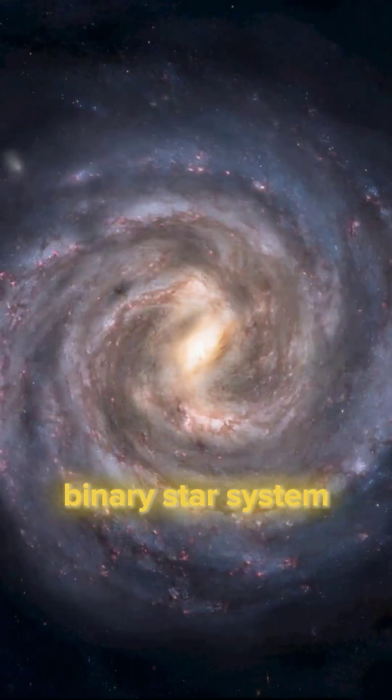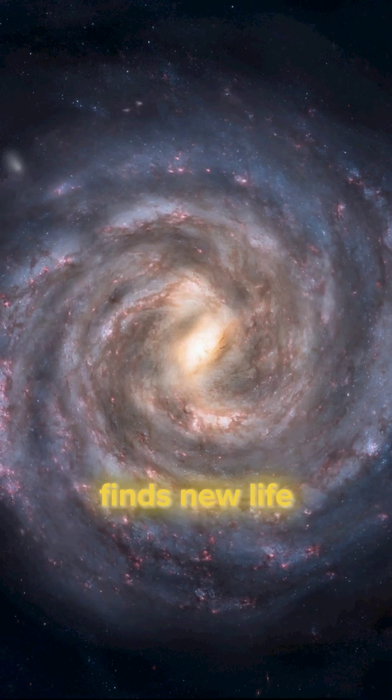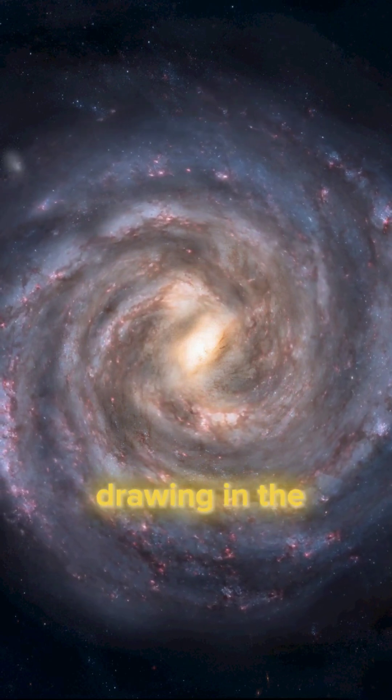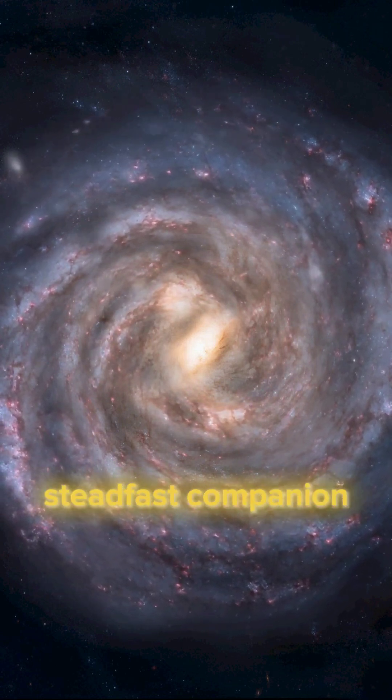Usually, in a binary star system, a giant, aging star finds new life by gently drawing in the essence of its smaller, steadfast companion.